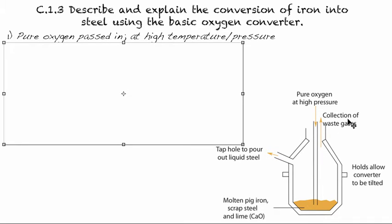There is a way to collect gas wastes, and then this can be rotated to pour out the liquid steel. And down here we have the molten pig iron, scrap steel, and lime. And so that's what's being mixed together before we pour it out.